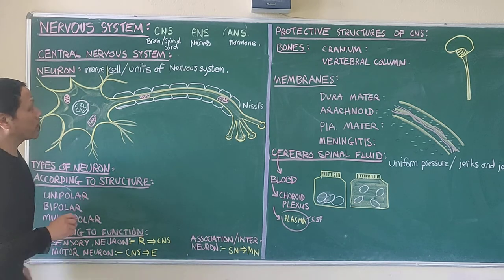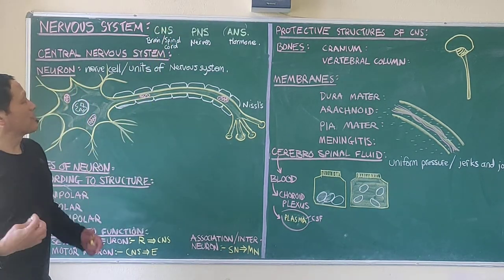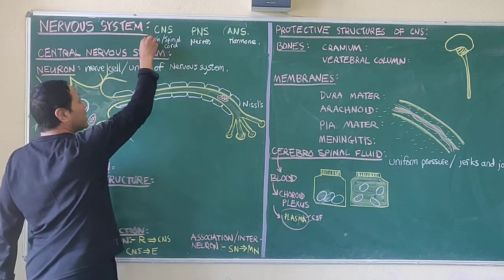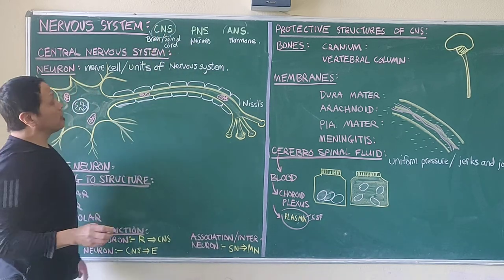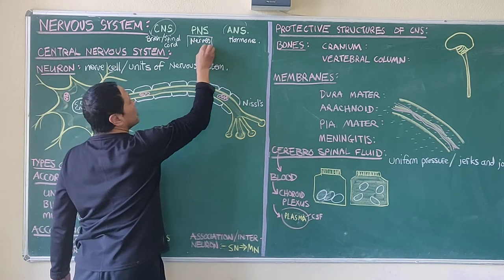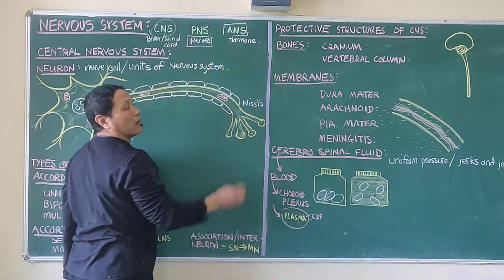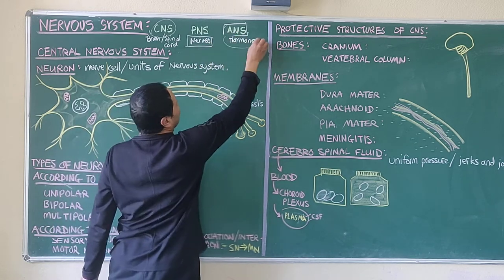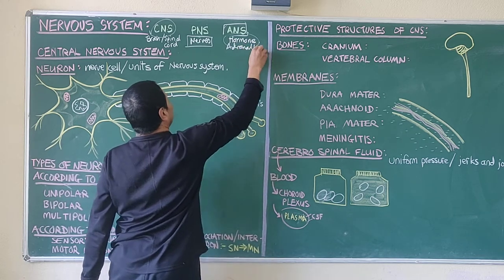The central nervous system is made up of the brain and the spinal cord. The peripheral nervous system comprises of nerves — we'll talk about that later. And the autonomic nervous system is controlled by hormones, and that hormone could be adrenalin.